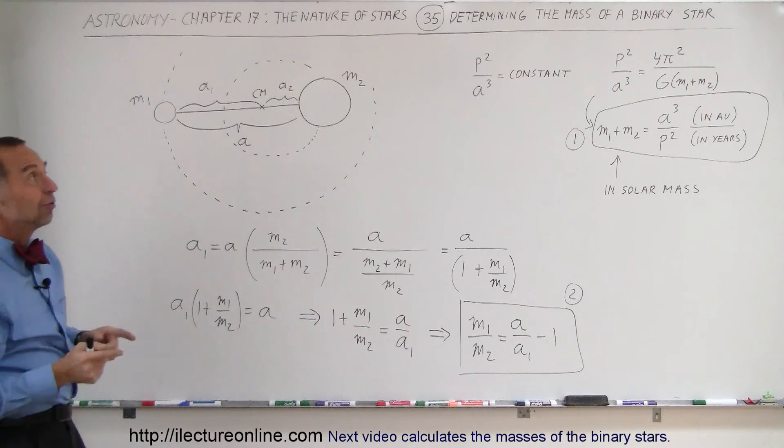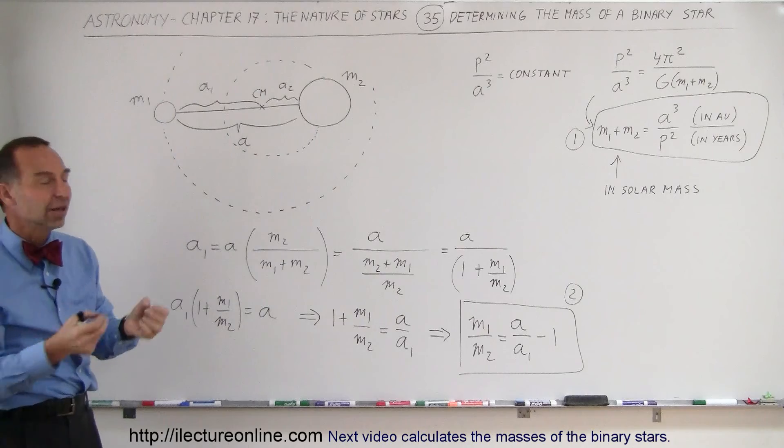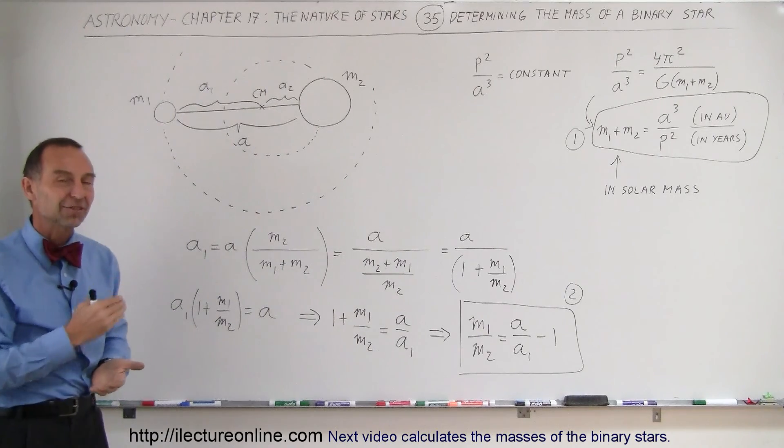And then just simply measure how long it takes to make one complete orbit, and then we'll be able to figure out the masses. If you want to know how that's done, in the next video I'll do an example of how to actually calculate the masses of two stars in the binary star system. And that's how we do that.